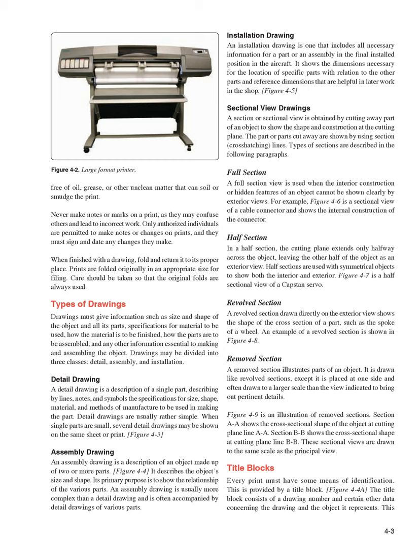Types of drawings: Drawings must give information such as size and shape of the object and all its parts, specifications for material to be used, how the material is to be finished, how the parts are to be assembled, and any other information essential to making and assembling the object. Drawings may be divided into three classes: detail, assembly, and installation.